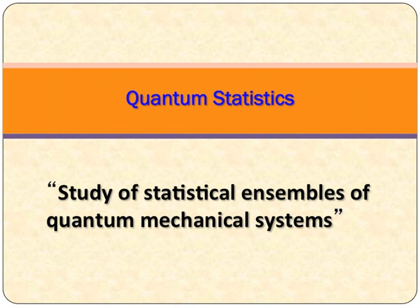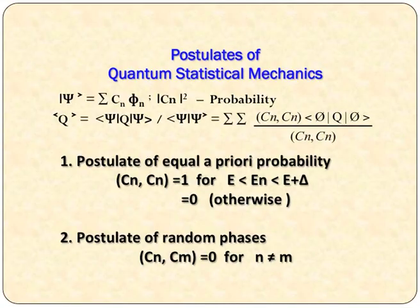Before going into the details of quantum statistics, let us look into the main quantum statistical postulates. If you recollect the quantum mechanical equation, a wave function psi can be represented in ket notation — that is nothing but the Dirac notation — where ket psi is equal to summation over C_n phi_n, where C_n is a constant and phi_n is a linear summation of all state vectors under Hilbert space. This vector can be represented where C_n squared is nothing but the probability of the wave function.